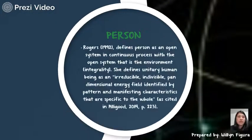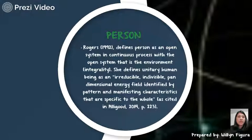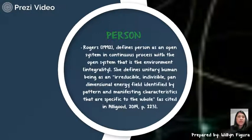Next is person. Rogers defined person as an open system in a continuous process with the open system that is the environment, or integrality. Within a conceptual model specific to nursing's concern, people and their environment are perceived as irreducible energy fields, integral with one another, and continuously creative in their evolution.